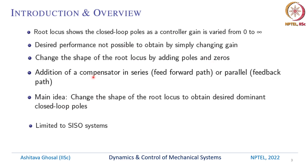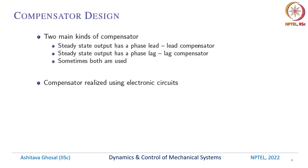These additions are called compensators. Compensators can be in series or in parallel in the feedback path. The main idea is to change the shape of the root locus to obtain a desired dominant closed-loop pole. As a disadvantage, these are limited to single input single output systems. There are two main kinds of compensators: if the steady state output has a phase lead we need a lead compensator; if it has a phase lag we use a lag compensator. Sometimes both are used. The compensators are normally realized using electronic circuits and need not be physical devices.